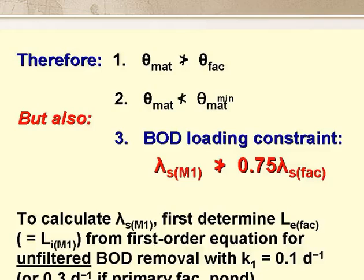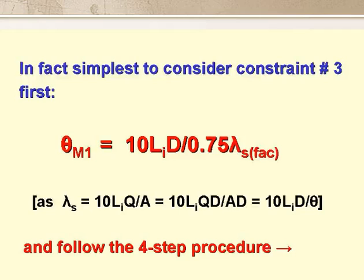We should also consider a BOD loading constraint. The BOD loading on the first maturation pond can't be greater than that on the preceding facultative pond, and it's better if it's quite a bit less. I prefer to say that the loading on M1 can't be more than 75% of the facultative pond loading. To calculate lambda SM1, we first determine the effluent BOD from the facultative pond using the first-order equation for unfiltered BOD removal, with K1 equals 0.1 day to the minus 1, or if it's a primary facultative pond, with K1 equals 0.3 day to the minus 1. It's best to consider this loading constraint first and determine the minimum value of theta M1, then follow the four-step procedure.